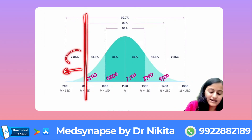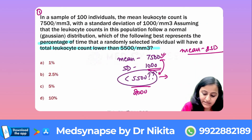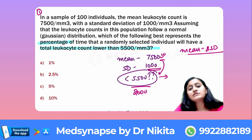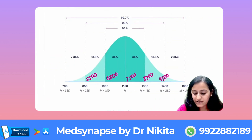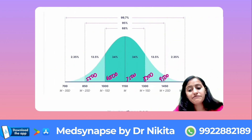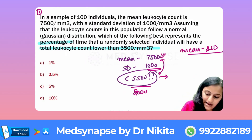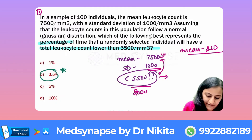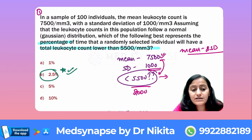The question asks how much is below 5500 — the answer is 2.5%. Next time if they ask above 9500, it is again 2.5%. The answer is 2.5%, not 5%.